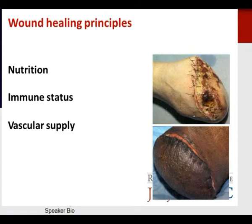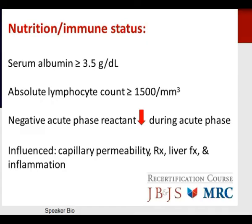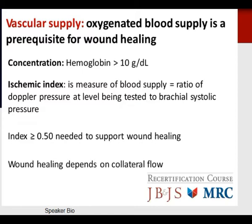Wound healing principles are essential to all amputations. In the lower extremity, nutrition, immune status, and vascular supply are most critical due to the dependency of the lower extremity. Key numbers often tested: serum albumin greater than 3.5 g/dL and absolute lymphocyte count greater than 1,500. You must also be aware of the negative acute phase reactant, which is decreased during the acute phase and can impact healing based on capillary permeability, medications, liver and renal function, and inflammation.